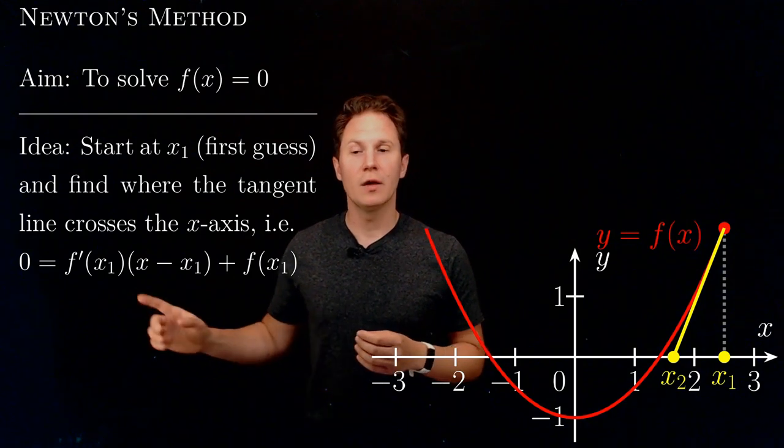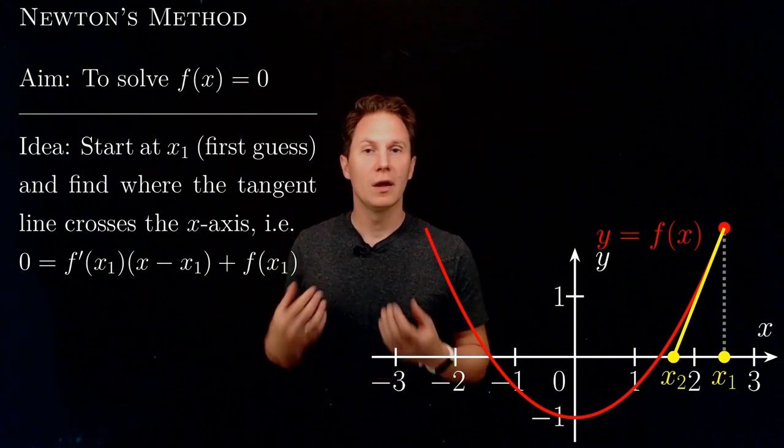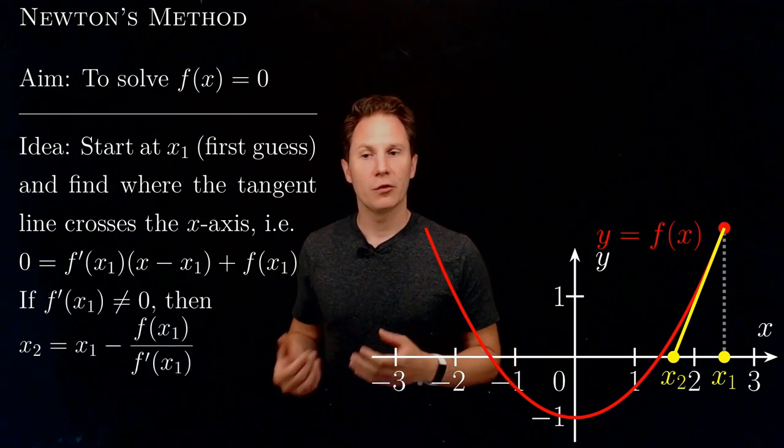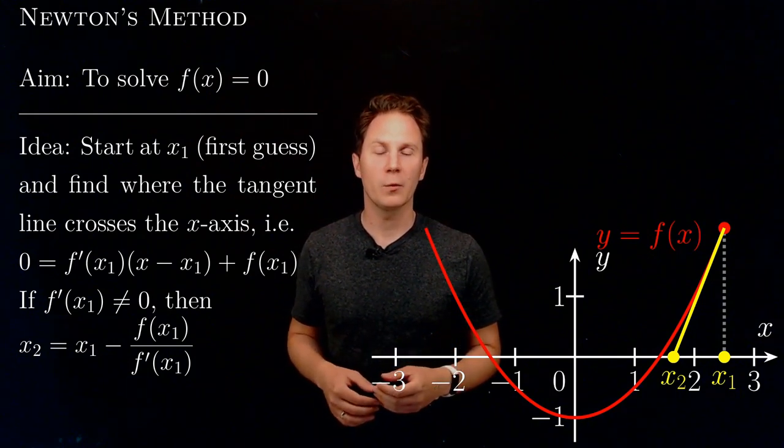We can do this if the slope of the tangent line at x₁, f'(x₁), is not zero. We get the solution x₂, that is x₁ - f(x₁)/f'(x₁).